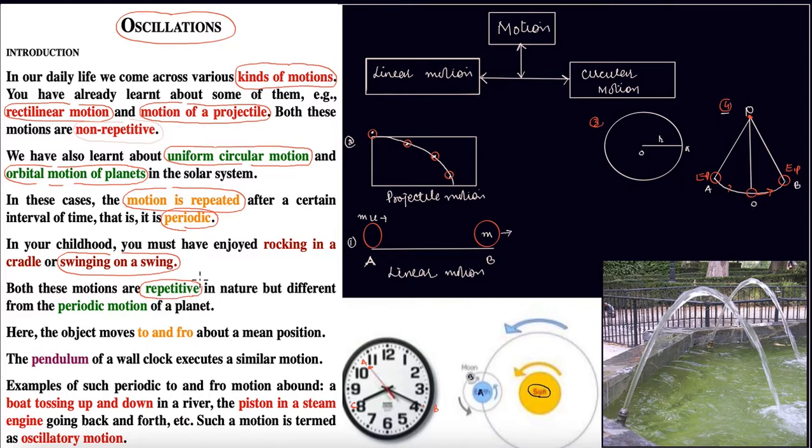In periodic motion, after a fixed interval, the particle repeats its position again. I've given you two examples of this - we call this periodic motion. When the object moves to and fro about the mean position, like you go here and come back, this is the mean position, and the object like a swing moves forward and backward around the center.